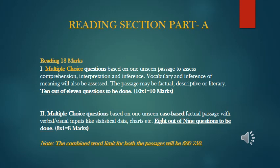Now we discuss the reading section of Part A. Reading section carries 18 marks in Part A and all questions are MCQs — multiple choice questions based on one unseen passage to assess comprehension, interpretation and inference. Vocabulary and inference of meaning will also be assessed. The passage may be factual, descriptive or literary. It can be from some novel, a description of some place, or factual data concerning some survey. 10 out of 11 questions to be done.